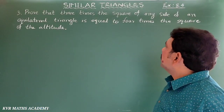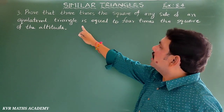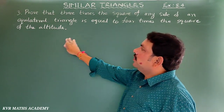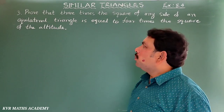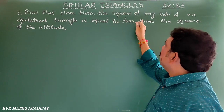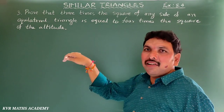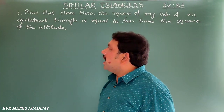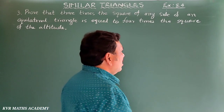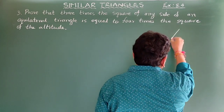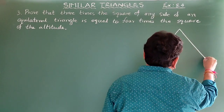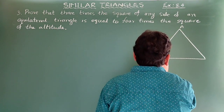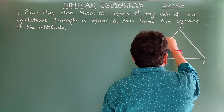Next, the third question. Prove that three times the square of any side of an equilateral triangle is equal to four times the square of the altitude.